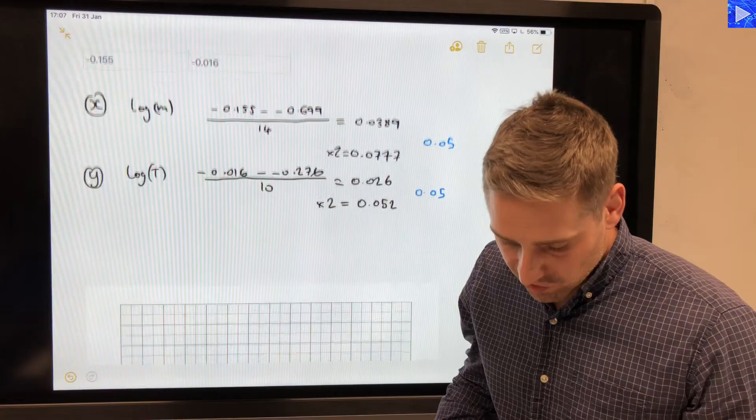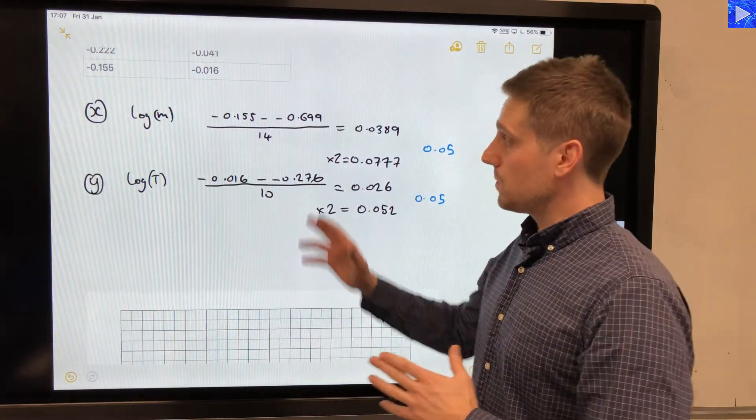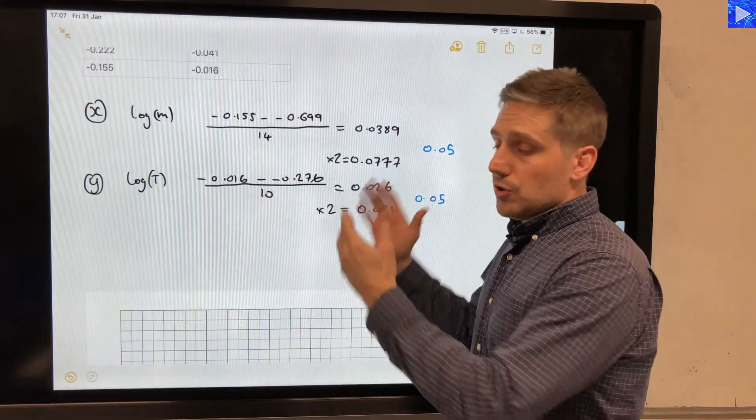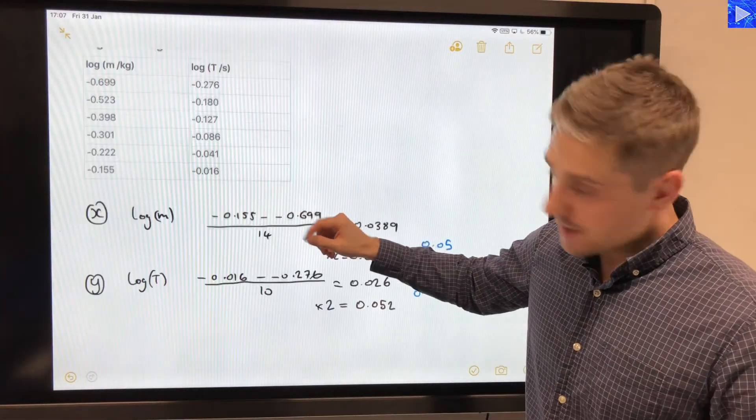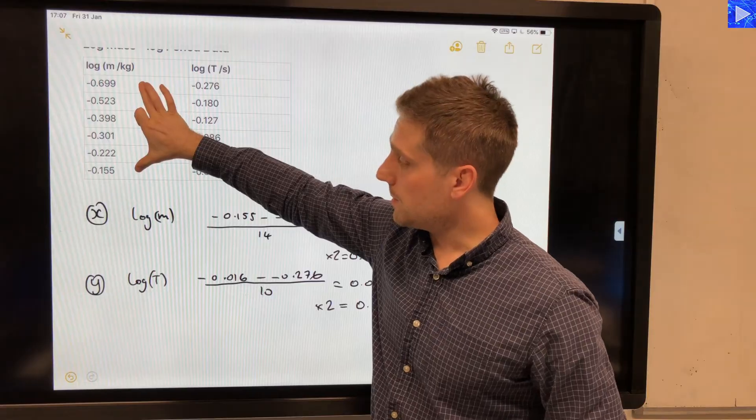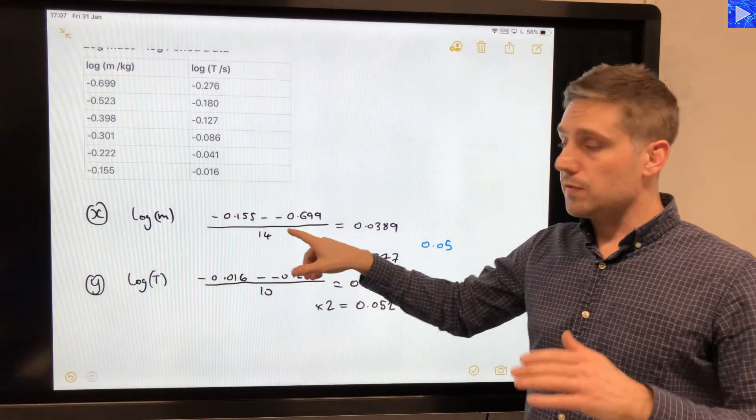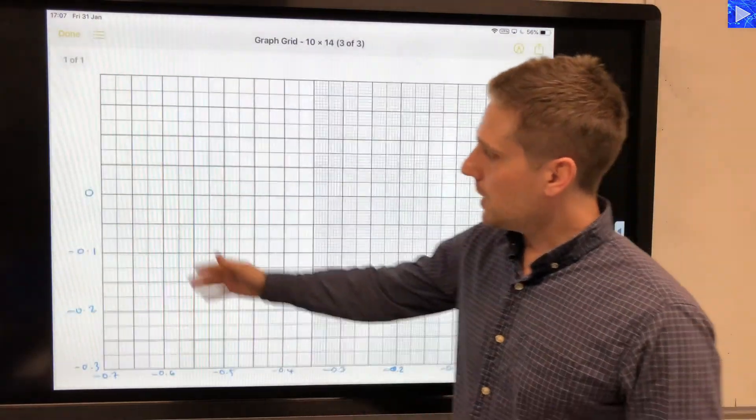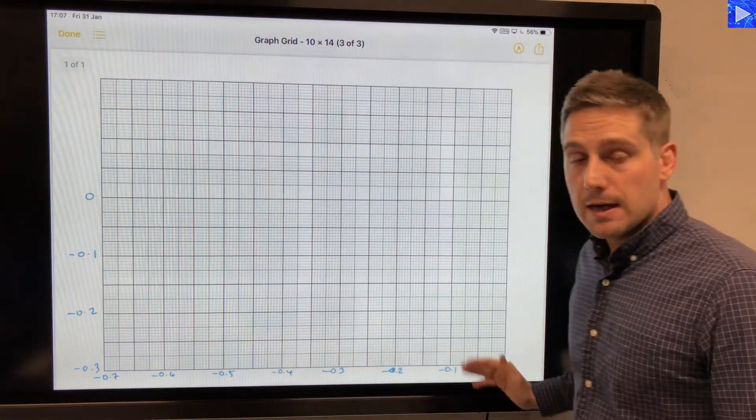So hopefully that strategy will help you. It's a very quick calculation to do to ensure that you're using half the graph. It doesn't take long just working out the difference between your maximum and minimum and then dividing by how many squares you've got. So you just need to count how many squares you've got in the y-axis and the x-axis.